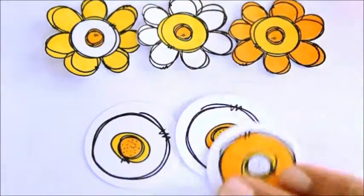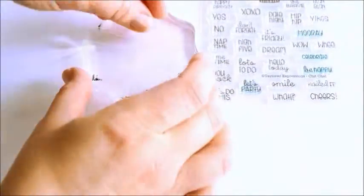You could certainly use a circle die for this step or even cut the mat by hand, but a punch is super quick.